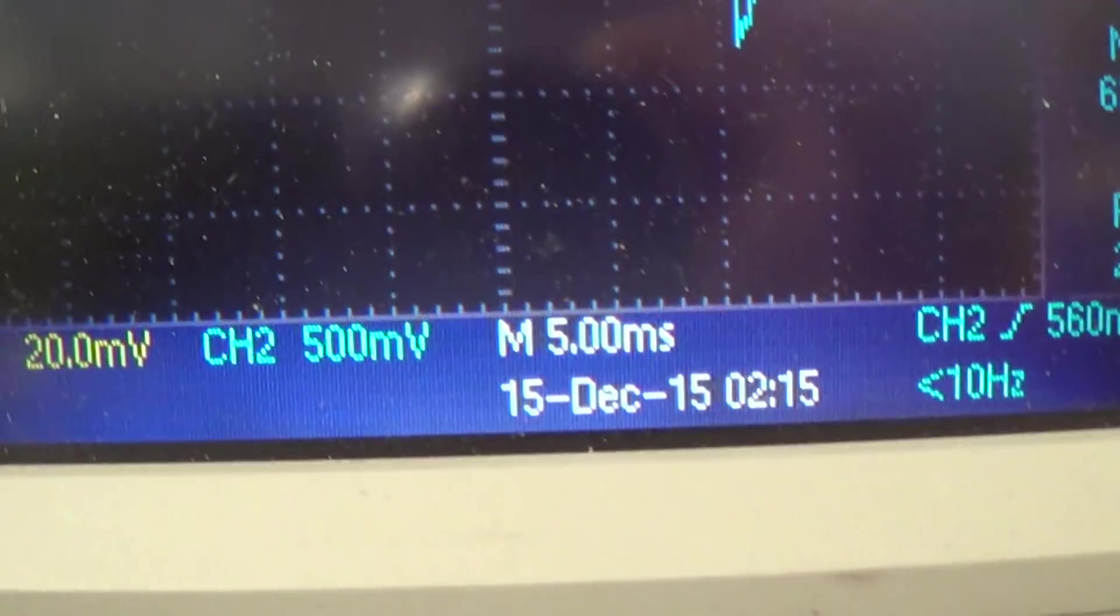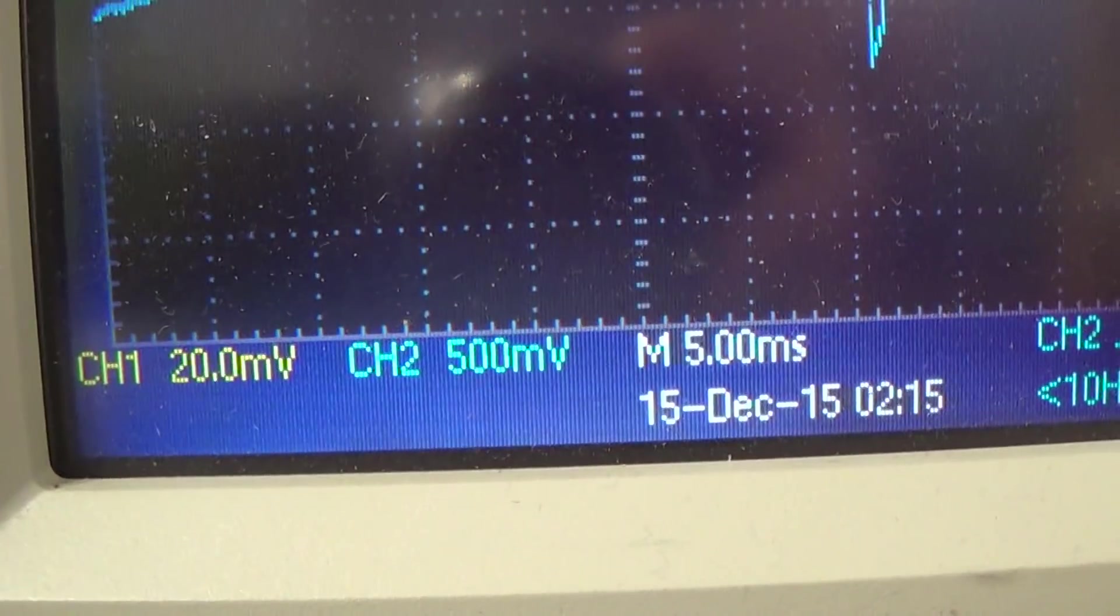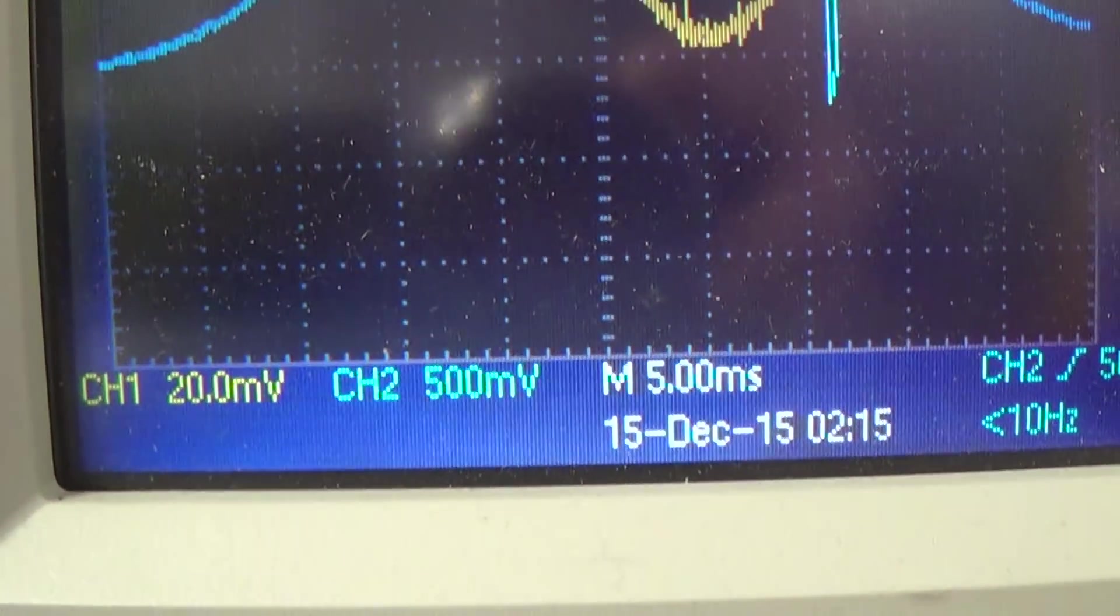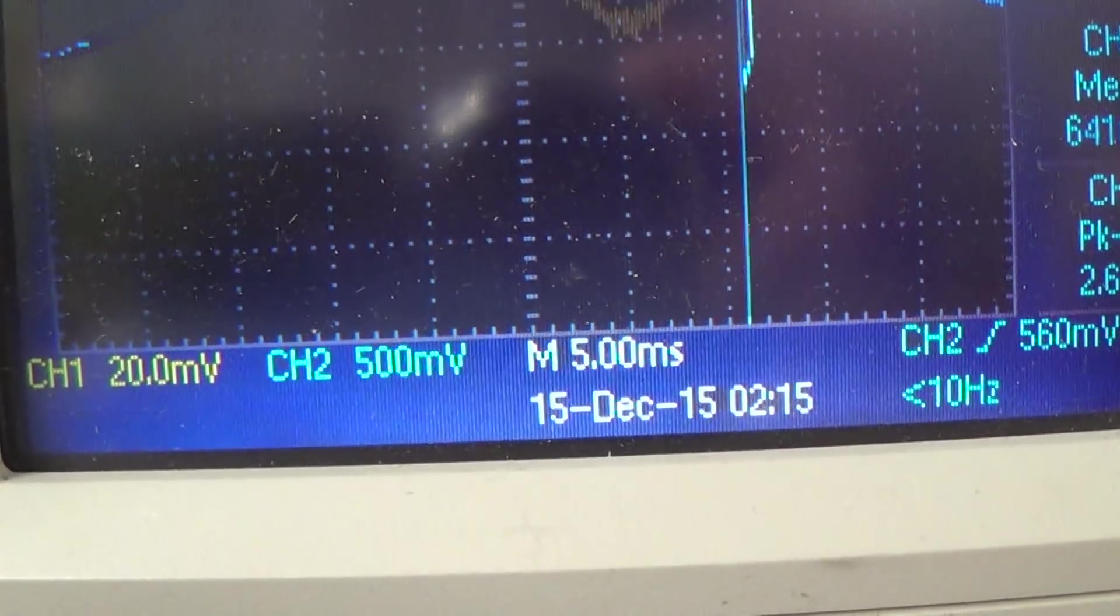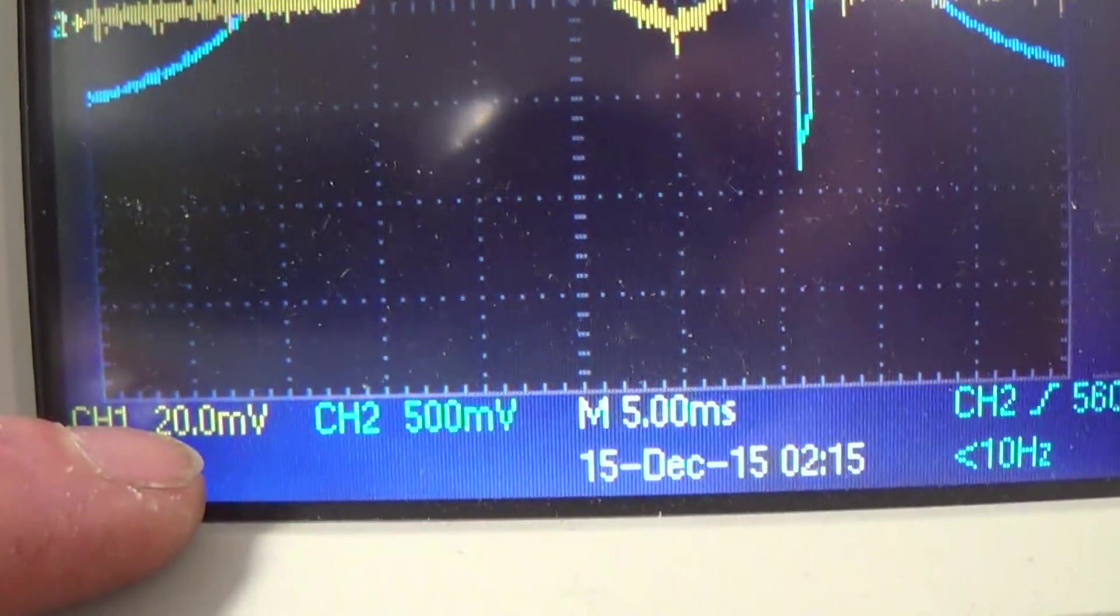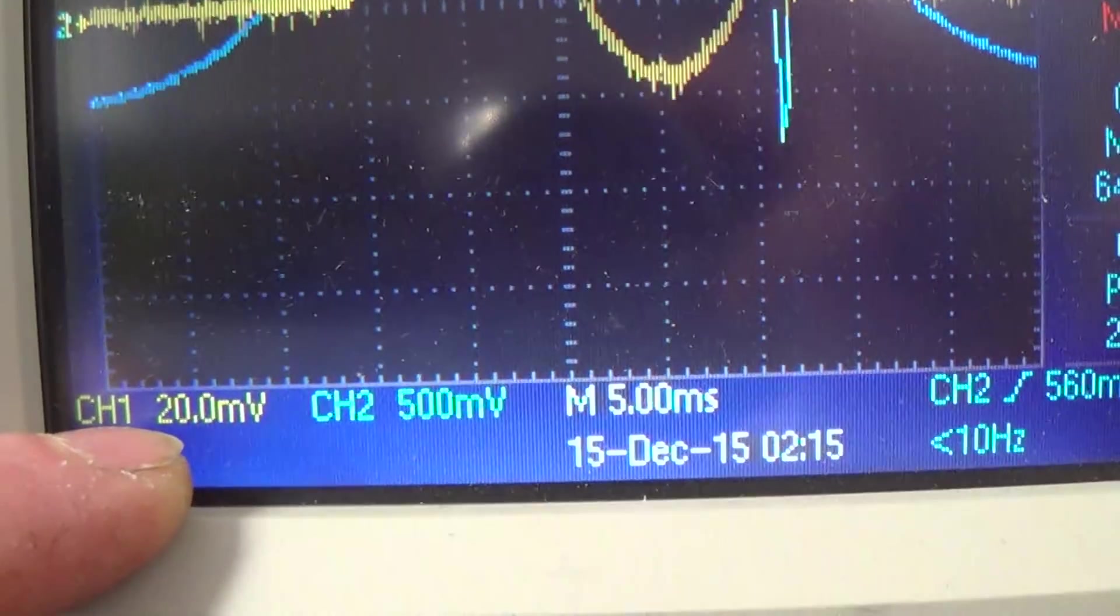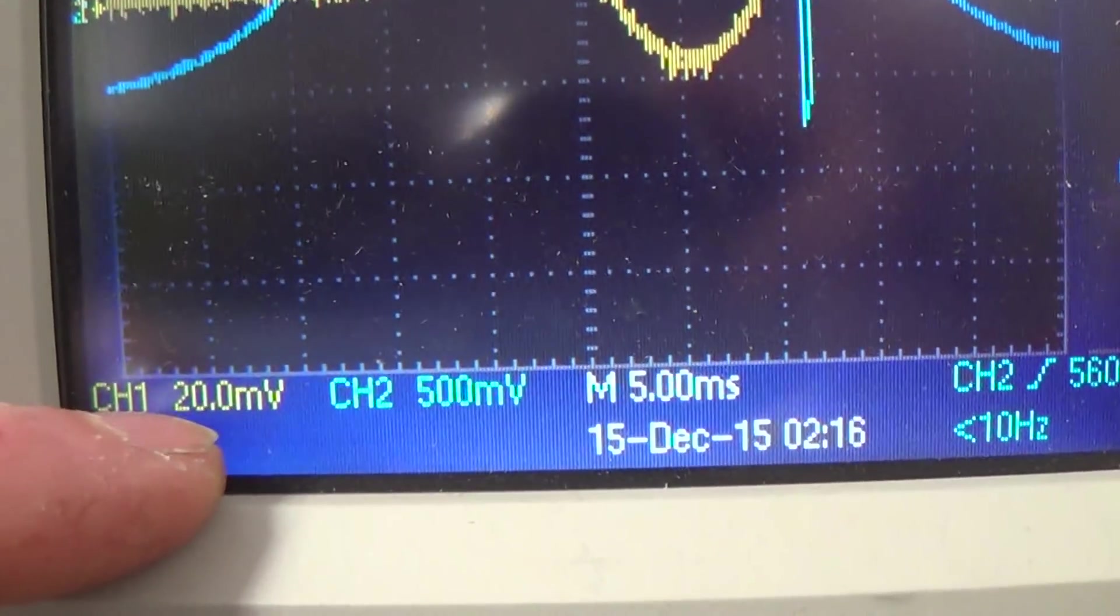So there's the data on there. Keep in mind the current sensing resistor is 0.05 ohms and that is our voltage division, sorry voltage division.